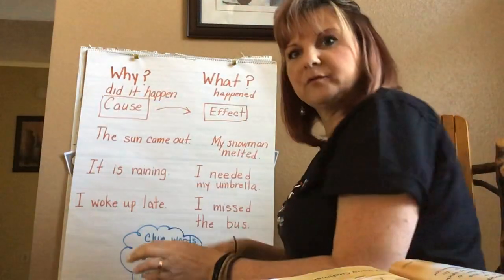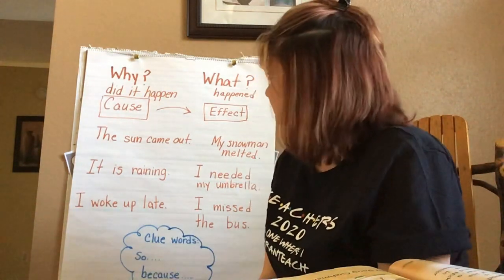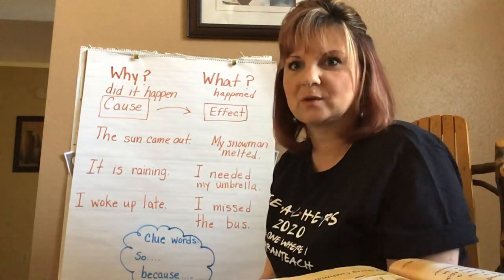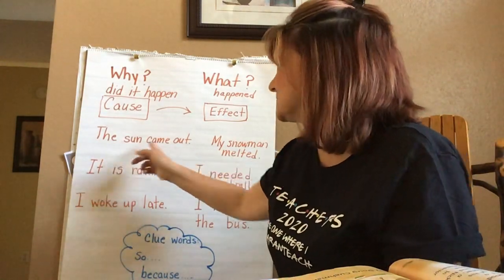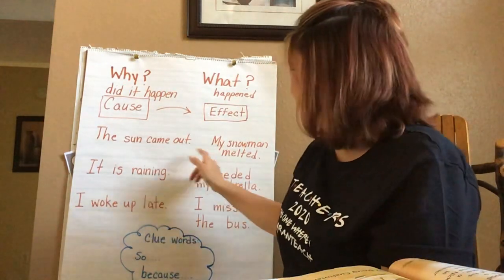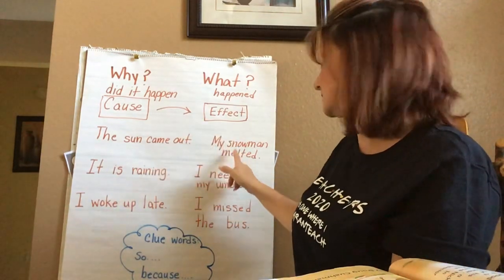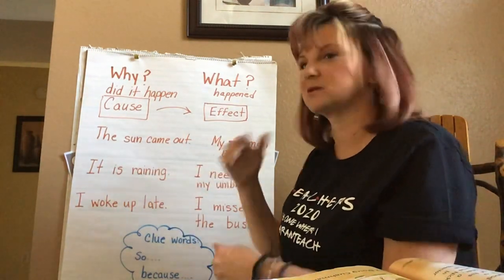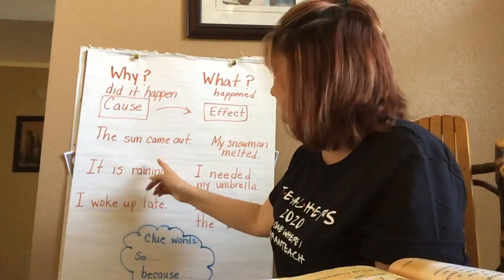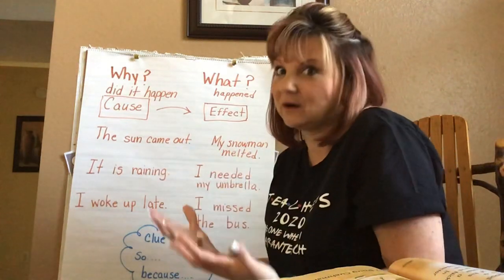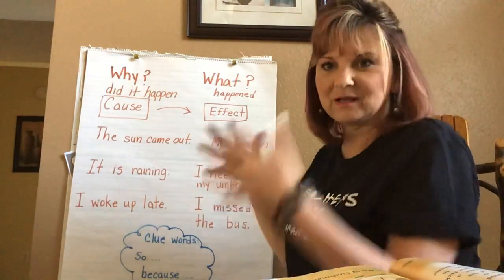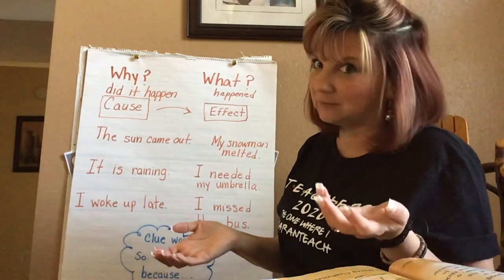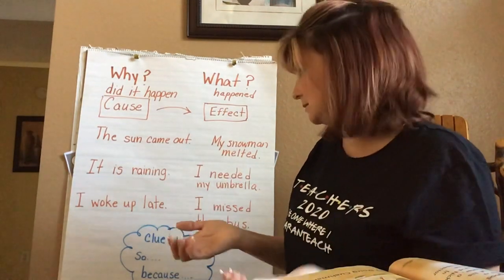All right, so we're gonna get started. At the end of the story, we're gonna talk about cause and effect. We've talked about that — we've seen a really funny video in our classroom. But here's kind of an overview of what cause and effect is, in case you forgot. The cause is just why something happened, and the effect is what happened. So I have some examples here. The sun came out — a warm day — and because the sun came out, it caused my snowman to melt. So because the sun came out, it melted my snowman. That's why it happened and what happened.